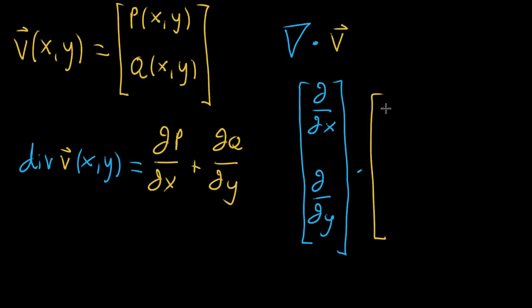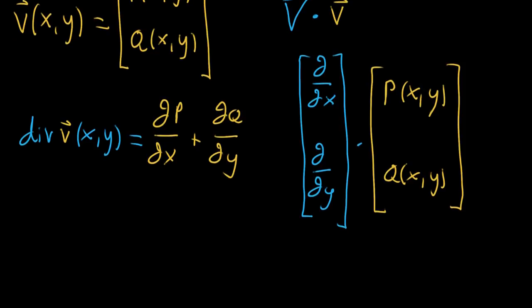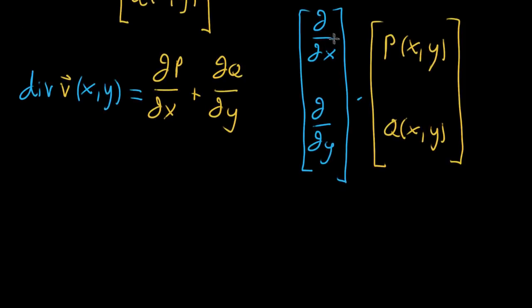And you imagine taking the dot product with that, and v, who has components, these scalar valued functions, p of x, y, and q of x, y. And when you imagine doing this dot product, and you're kind of lining up terms, and the first one multiplied by the second, quote unquote multiplied, because in this case, when I say this first component multiplied by p, I really mean you're taking that partial derivative operator, ∂/∂x, and evaluating it at p. That's kind of what multiplication looks like in this case.